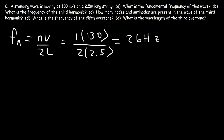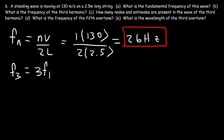That's the answer to part A. Now part B: what is the frequency of the third harmonic? The frequency of the third harmonic is simply 3 times the fundamental frequency. The fundamental is F1, the second harmonic is F2, and the third harmonic is F3. So the third harmonic is 3 times 26, which is 78 hertz.